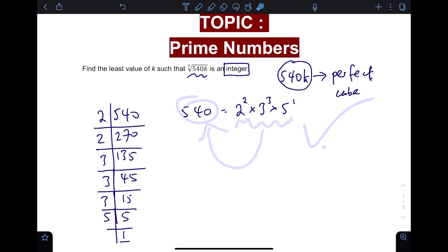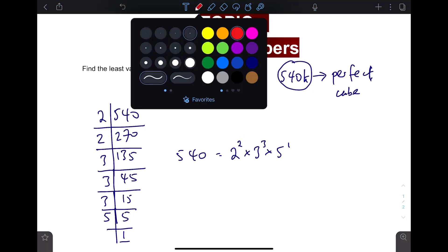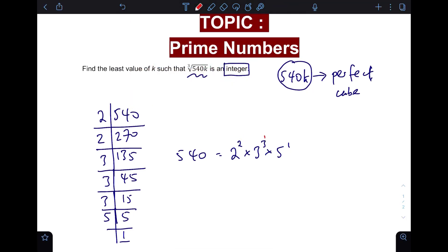Now to make sure that you have a perfect cube, all the powers must be multiples of three. At the moment this is already a multiple of three as a power, but this is not, and this is also not. So these two numbers need to be adjusted.